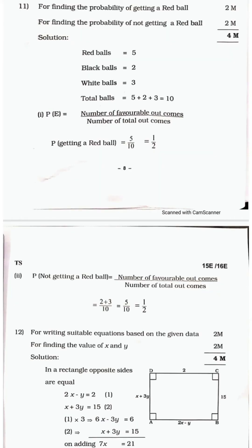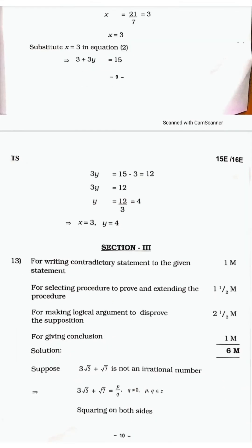For Question 11 on probability: if you find P(getting a red ball) you will get two marks, and P(not getting a red ball) gives you two more marks — totaling four marks. For Question 12: for writing suitable equations based on the given data you will get two marks, and for finding the values of x and y you will get two marks — totaling four marks. If you complete only the first part, you still get two marks.